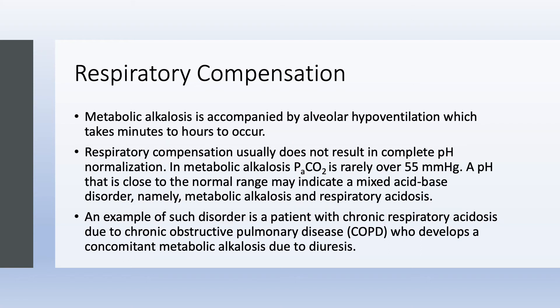Metabolic alkalosis is associated with a rise in PaCO2, meaning alveolar hypoventilation, which takes minutes to hours to occur. The correction in pH is never complete — you don't expect pH normalization. If the pH is normal, you probably have a mixed acid-base disorder, such as metabolic alkalosis combined with respiratory acidosis. In metabolic alkalosis, PaCO2 is rarely above 55. A classic example of both disorders together is a COPD patient with chronic respiratory acidosis who then develops metabolic alkalosis from diuresis.